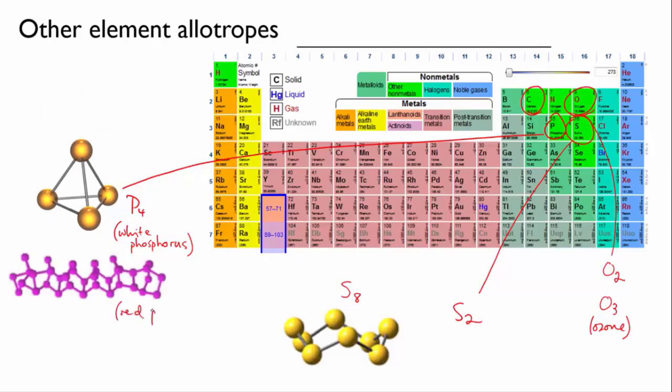In contrast, the relatively stable red phosphorus allotrope has largely amorphous bonding.